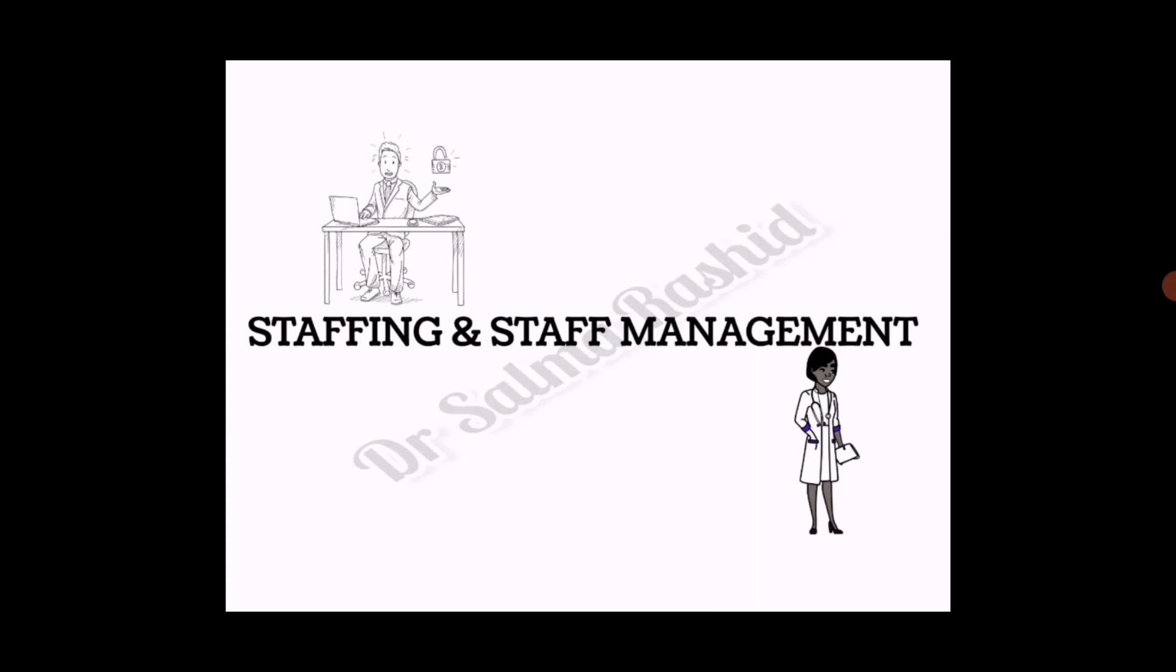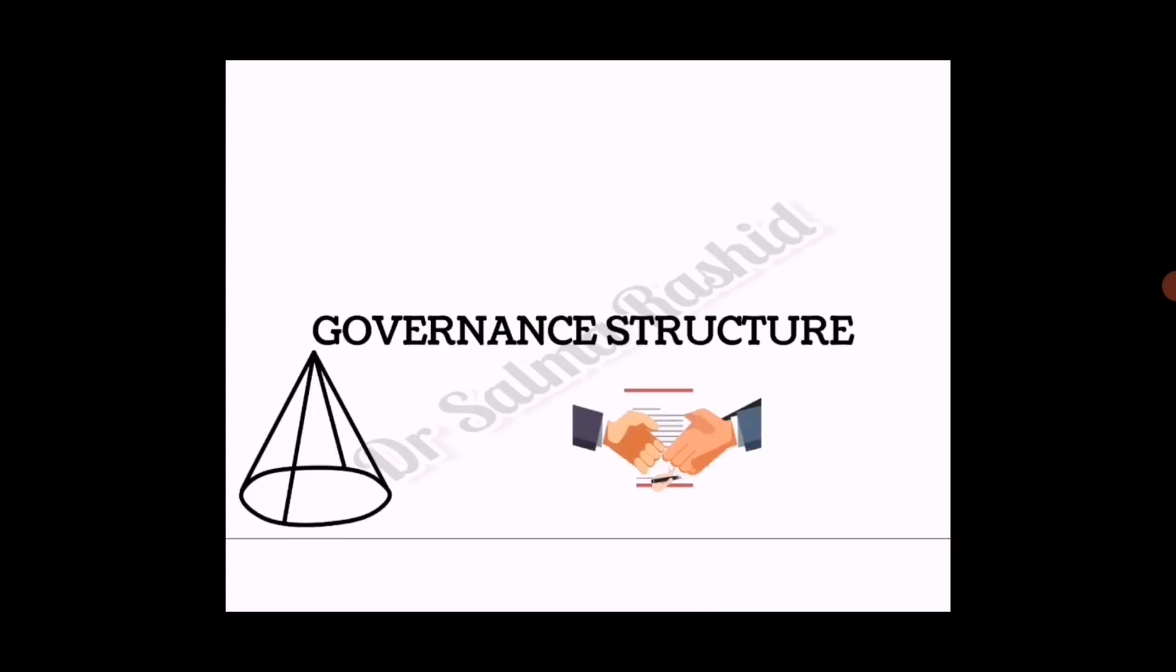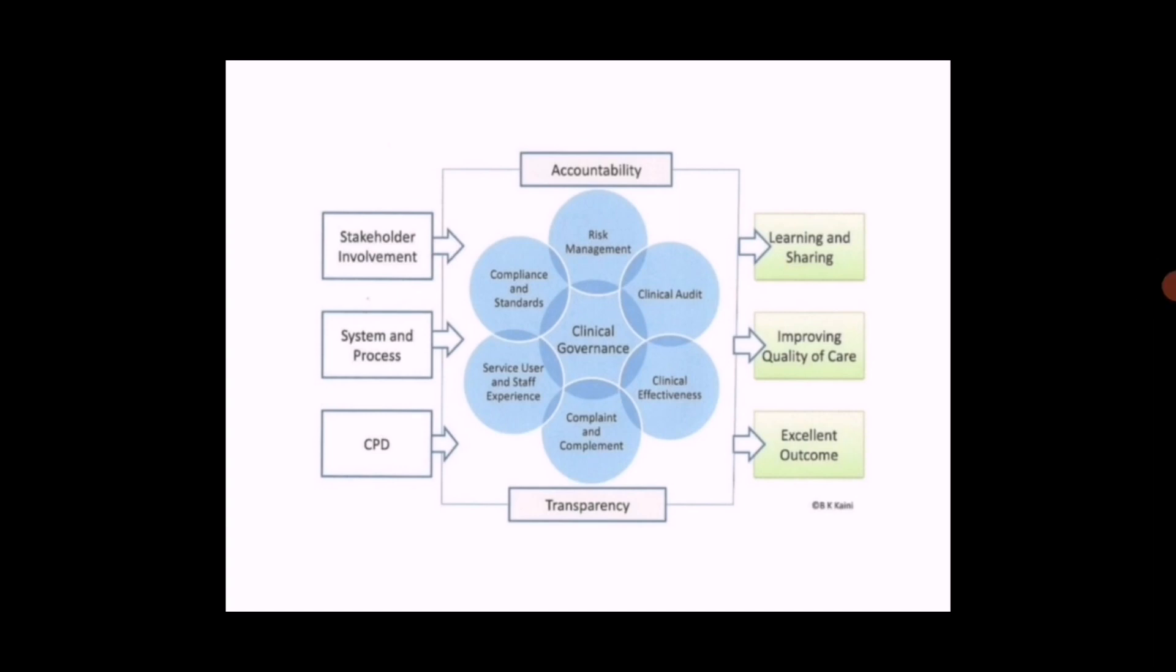Now something related to governance structure. Each network has local steering groups or boards that feed into regional and national governance processes and through local STP governance infrastructure. This diagram shows clinical governance and its components which I have already discussed. Stakeholders, systems and processes, and CPT are involved and they make sure that all the things are going smoothly and check for accountability and transparency. Their main motive is learning and sharing, improving quality of care, and excellent outcomes.